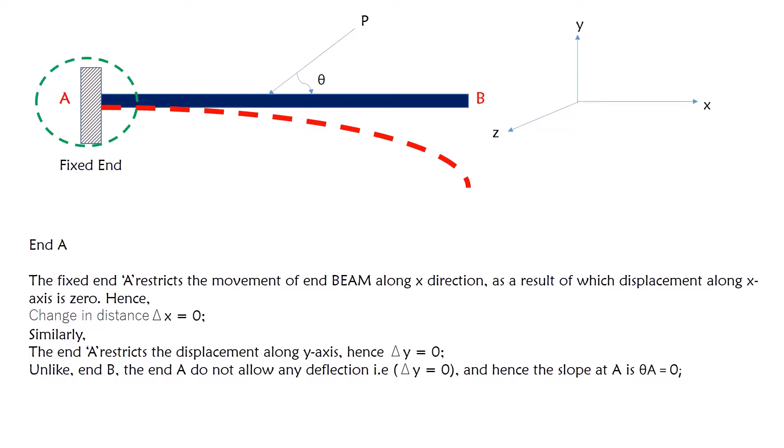As a result of which, the displacement along X direction is actually zero. There is no kind of movement happening, so delta X is equal to zero. Displacement along Y direction, it is not moving up and down, so the displacement along Y axis is delta Y equal to zero. There is no kind of deflection happening at A like B, so there is no slope of theta A equal to zero. There is no X value, there is no Y value, and there is no slope. The slope value means that along Z direction, there is no rotation happening at the point A. There is no rotation in the sense the rotational movement is also restrained.